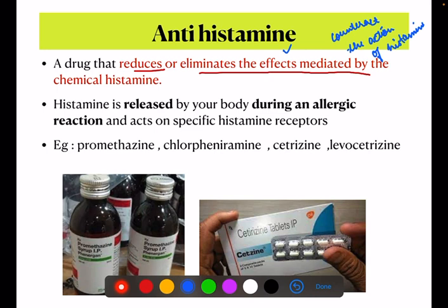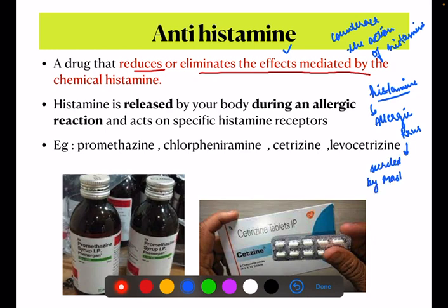Before proceeding with the topic, you should know what histamine is and how it works. Histamine is a chemical which is released during allergic reactions. It is secreted by mast cells or basophils in the blood. Histamine is released by the body during allergic reactions and acts on specific histamine receptors.